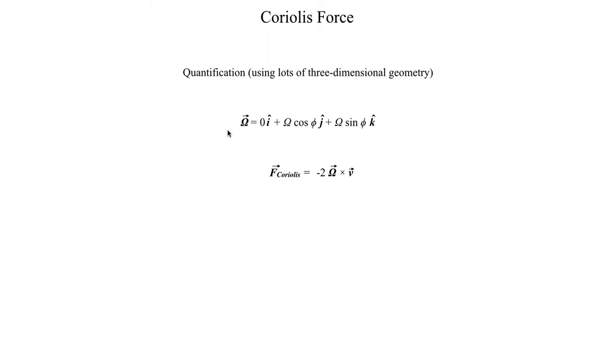When using this vector up here, the Coriolis force is in fact defined as minus two omega, this omega vector, this Earth's angular velocity vector, cross-product with the velocity vector of the object in question.